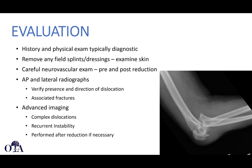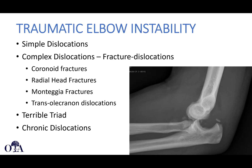CT scanning can sometimes be obtained post-reduction. A simple elbow dislocation means there is no fracture — just a pure ligamentous injury. A complex dislocation means a fracture-dislocation, a term used almost exclusively in the elbow context. Complex dislocations involve fractures such as coronoid, radial head, or Monteggia-type injuries along with the dislocation.